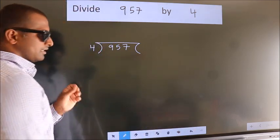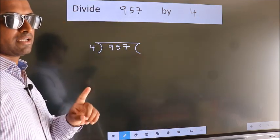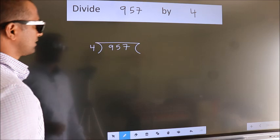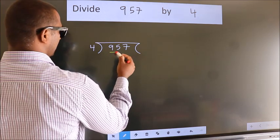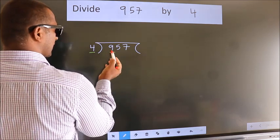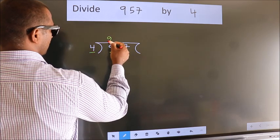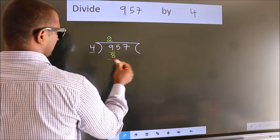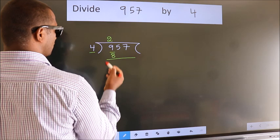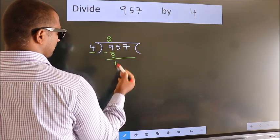This is your step 1. Next, here we have 9, here 4. A number close to 9 in the 4 table is 4 twos, 8. Now, we should subtract. We get 1.